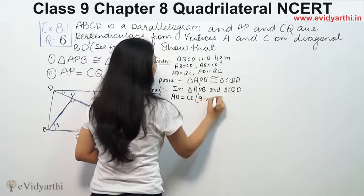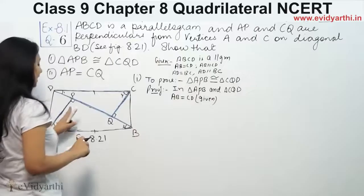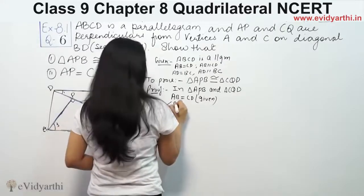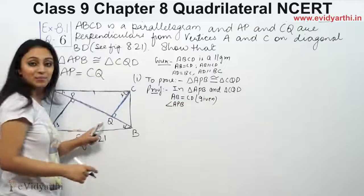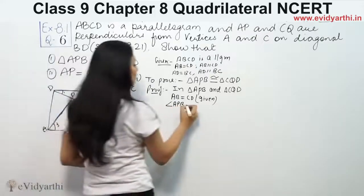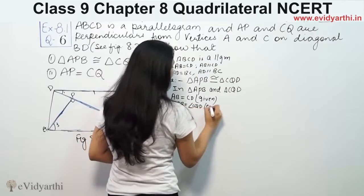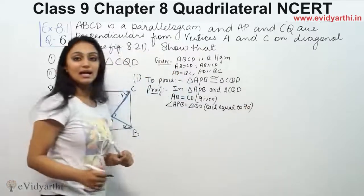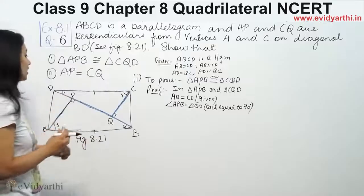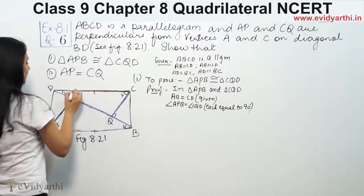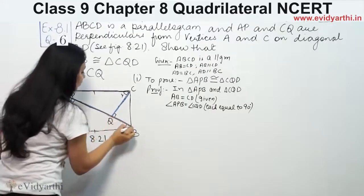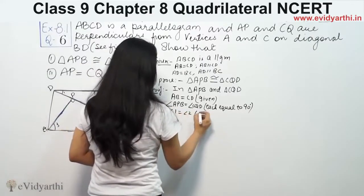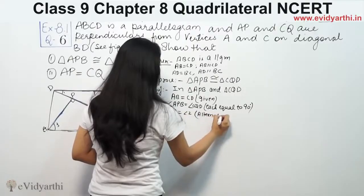We have a 90 degree angle, so we have two angles of 90 degrees. Angle APB will be equal to angle CQD, each equal to 90 degrees. We have seen that angle 1 is equal to angle 2, because if you see this is Z-form — the alternate angles are equal, so angle 1 equals angle 2. Alternate angles.